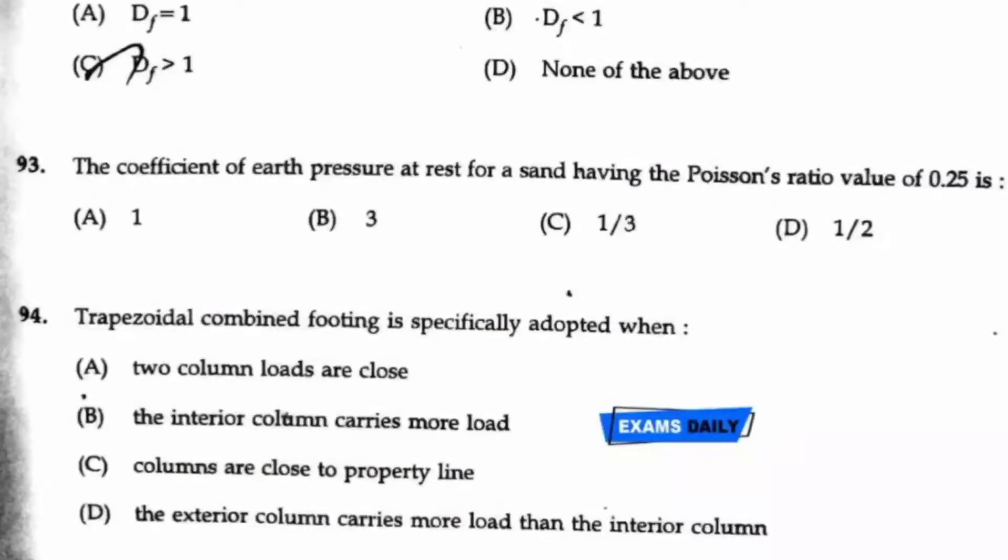Question number 94, the trapezoidal combined footing is specifically adopted when the exterior column carries more load than the interior column, option D.